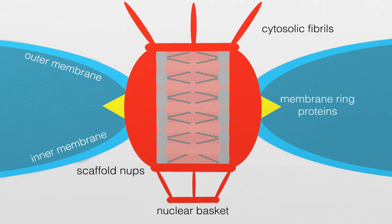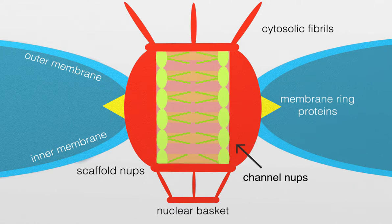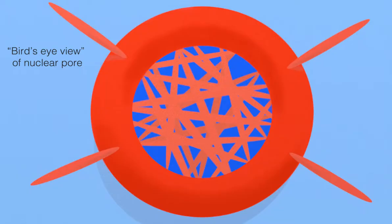Scaffold NUPs are coated with channel NUPs, which create a mesh of filaments across the pore. This mesh is like a sieve allowing only small molecules to pass through.